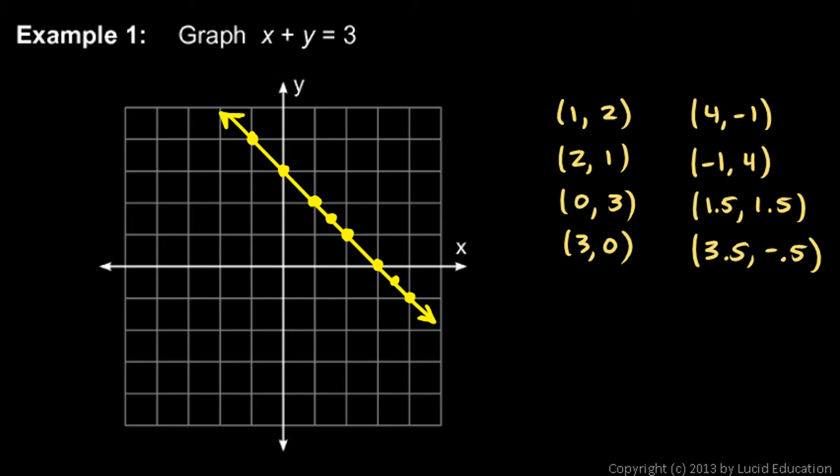So this line represents all infinite solutions to this equation. And this equation, x plus y equals 3, is referred to as a linear equation. You can write that in your notes in the blank there. It's a linear equation because the graph of the equation is a line. And the graph gives us a visual picture of all the solutions.